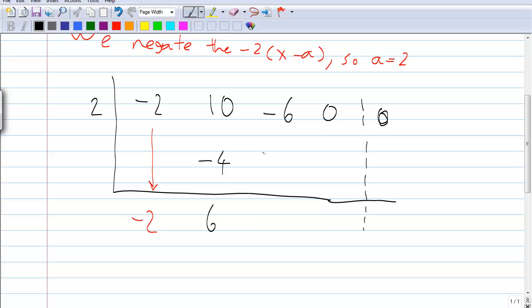2 times 6 is 12. -6 plus 12 is 6. Again, 2 times 6 is 12. 0 plus 12 is 12. 2 times 12 is 24. Our remainder is 24.